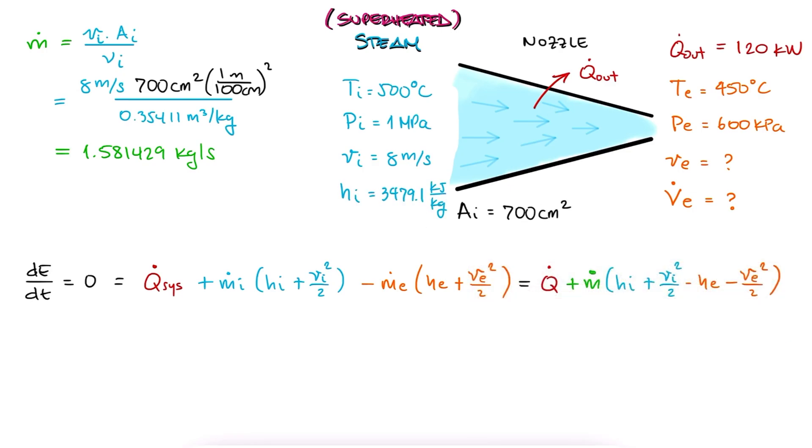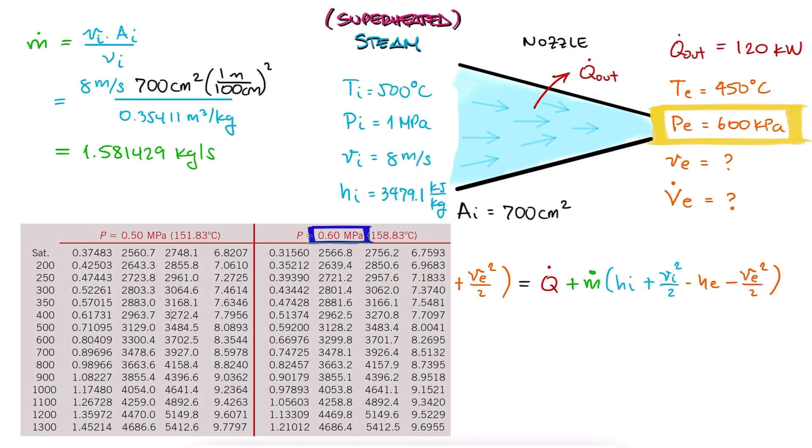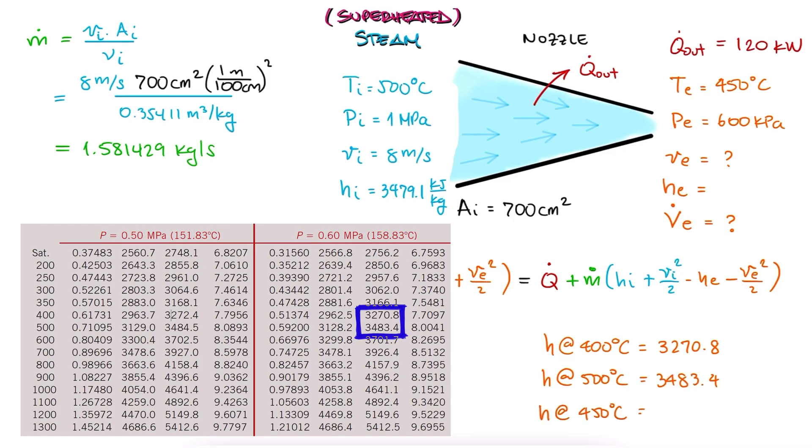For the exit, we find the subtable for 600 kPa and a temperature value of 450 degrees Celsius to write down the specific enthalpy at the exit, HE, as the average of the enthalpy for 400 and 500 degrees Celsius using basic interpolation.